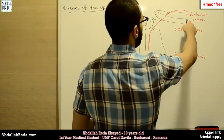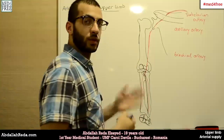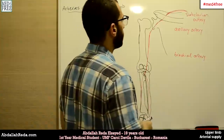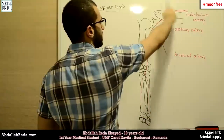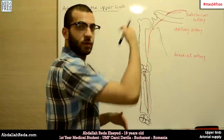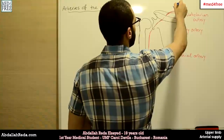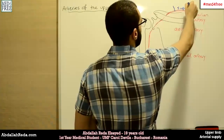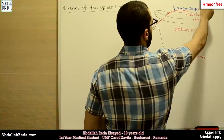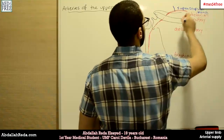So first of all, the subclavian artery gives a branch called the suprascapular branch. It's called the suprascapular branch because it supplies the upper region of the scapula — the suprascapular branch of the subclavian artery.